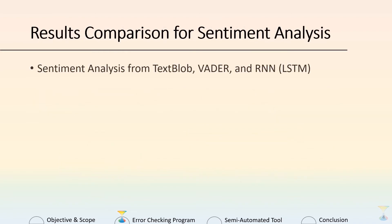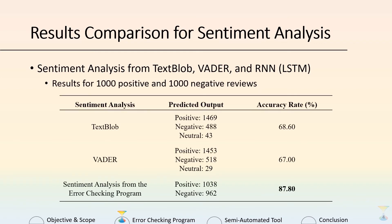As mentioned, the concept is passed into sentiment analysis to get the polarity scores. In this project, we tested three different types of sentiment analysis: TextBlob, VADER, and a deep learning approach — LSTM, which is long short-term memory. The results from 1000 positive and 1000 negative reviews show that TextBlob and VADER, using a lexicon-based or rule-based approach, tend to predict more positively, with accuracy around 67 to 68%. The deep learning approach has more balanced predictions and a higher accuracy rate of 87.8%. Hence, we decided to use the deep learning approach as our sentiment analysis.